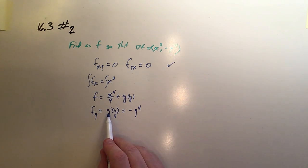And now I know that the first derivative of whatever this function g was that I had to add to this to form f, I know that that's actually equal to -y^4. So I can integrate. I can get g itself.